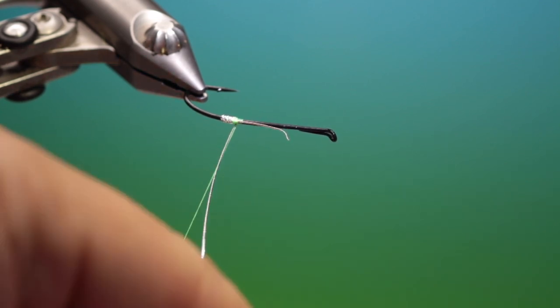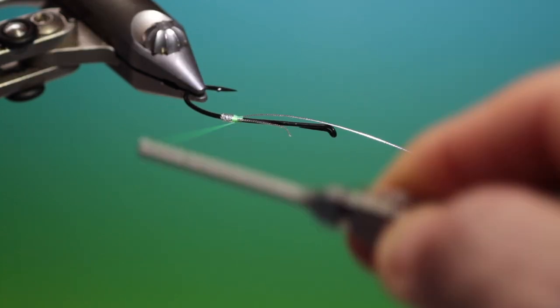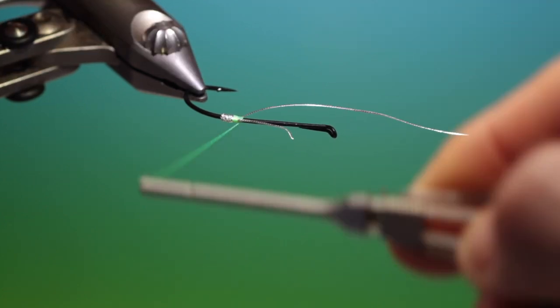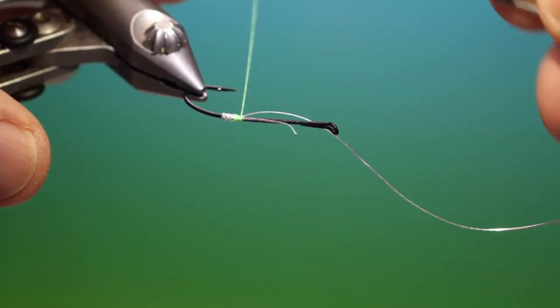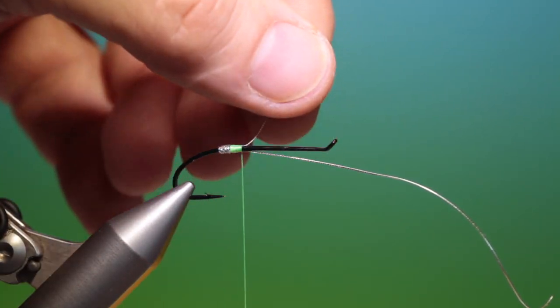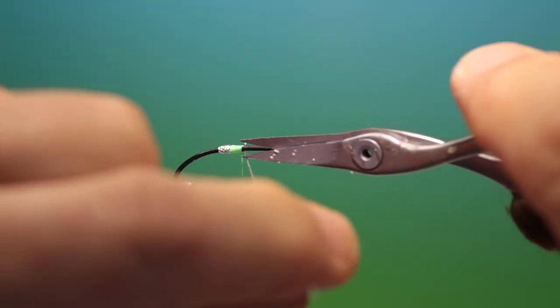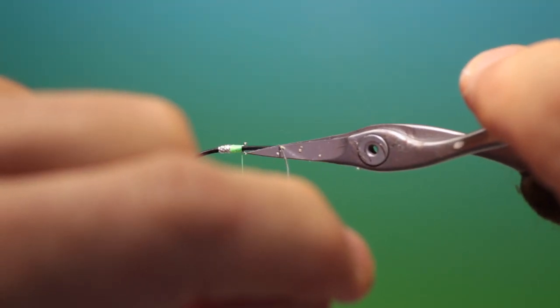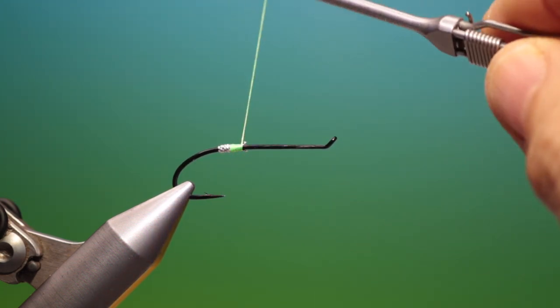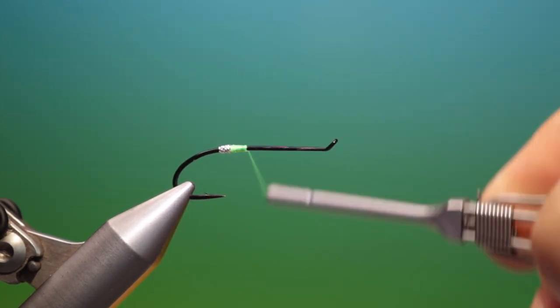Turn our vise this way again and we'll just lock that off like so and then we can trim these off there and there and what we want is a little green butt.